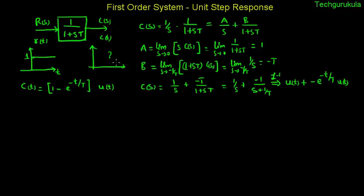u of t here signifies that the output is valid for t greater than 0. If you see this now has two terms: one is a constant 1 times u of t, and the second term a negative exponential with a negative sign outside times u of t.